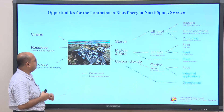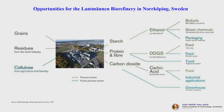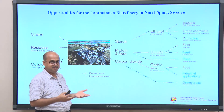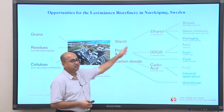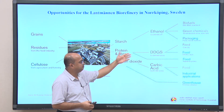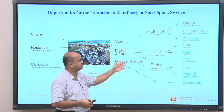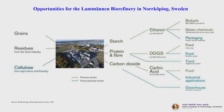Looking at the aerial view of the plant, grains and residues from food industries, as well as cellulose from agricultural and forest tailings, are processed into three distinct streams: a starch-rich stream, and a protein and fibre-rich stream from pre-processing. The starch goes to the ethanol platform which gives biofuels, green chemicals and packaging. The protein and fibre goes to the DDGS platform where it is converted to feed and food. Carbon dioxide goes to the carbic acid platform for food and industrial applications, and also contributes to the bio-based carbon dioxide capture and sequestration cycle.